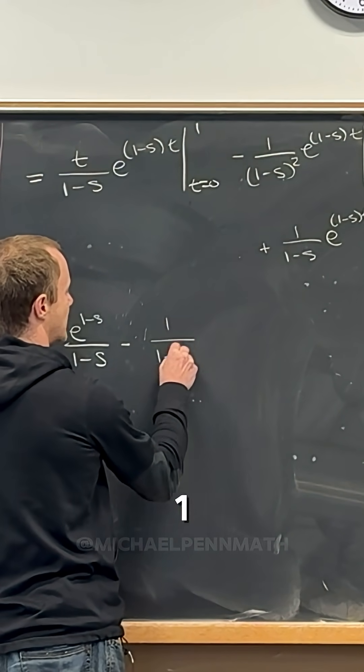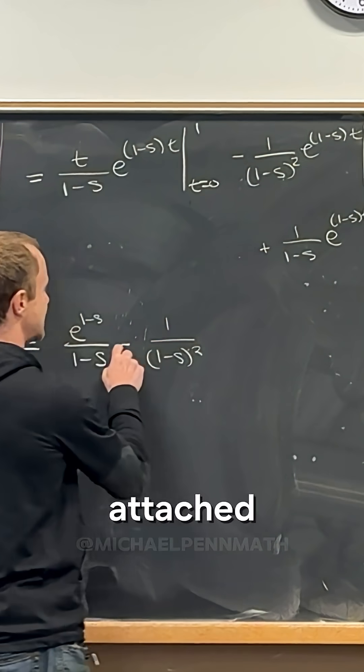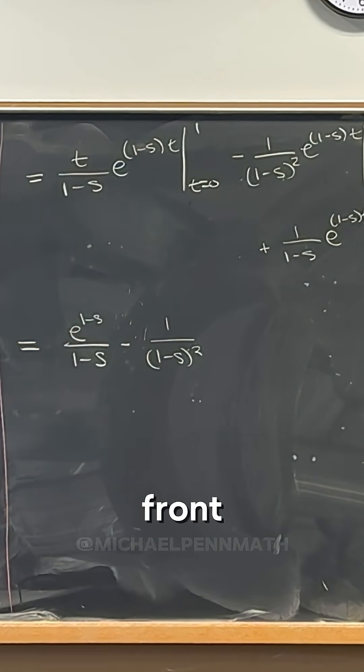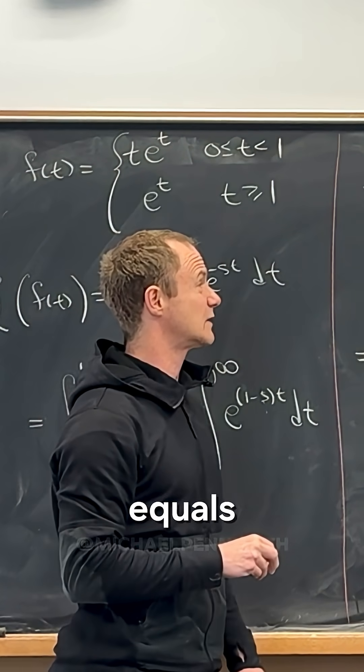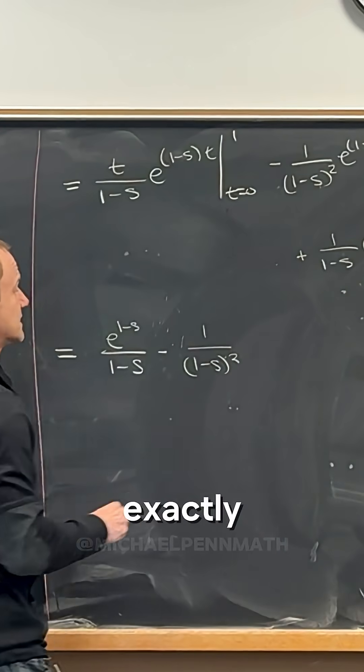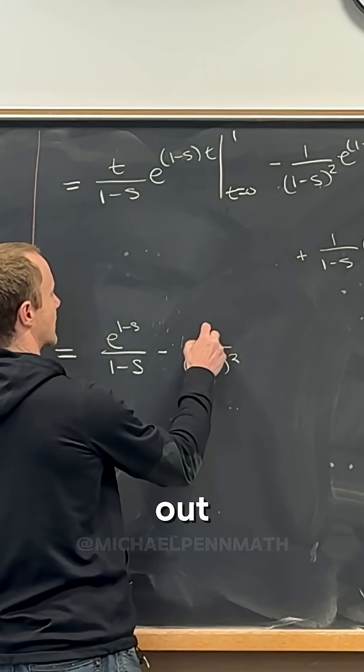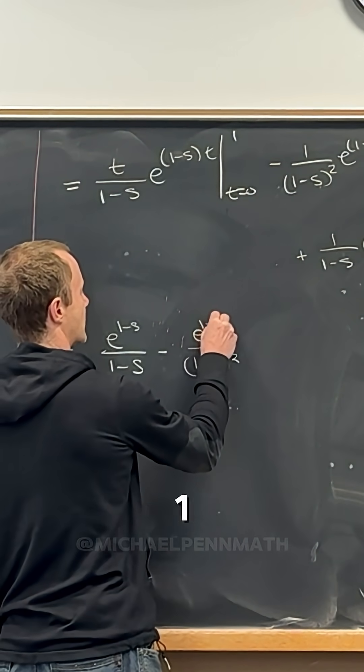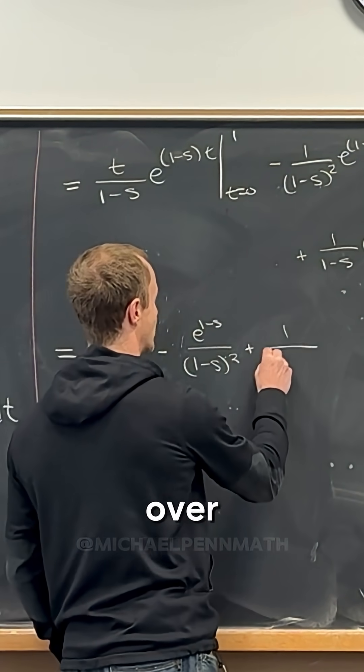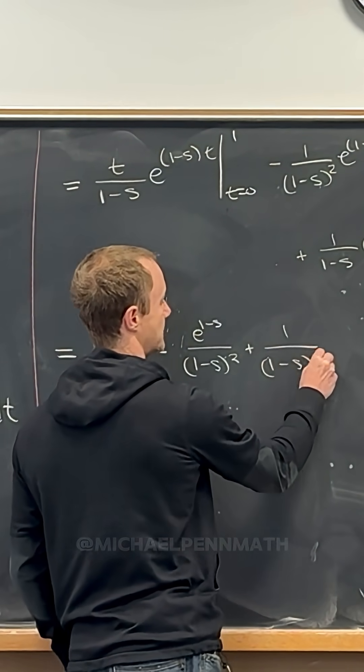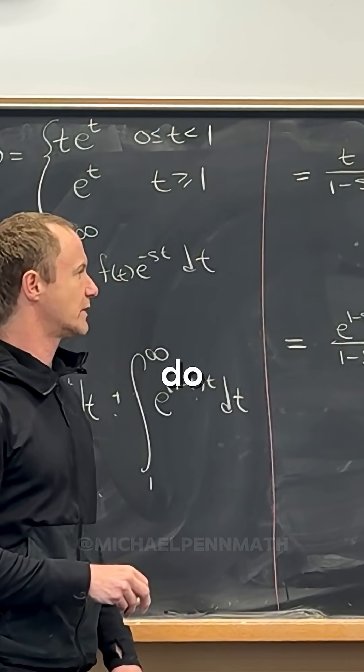Yeah, good. One minus s squared, and look it's attached to a minus sign because of the minus sign out front, right? And then if, what if we put t equals zero into that? Yeah, exactly. Oh wait, I left something out here, right? e to the one minus s. And then the other one is just one over one minus s squared, right? Because e to the zero is one. What do we get for the next part?